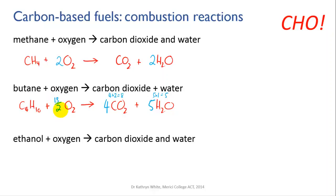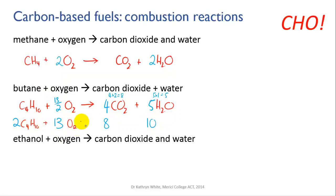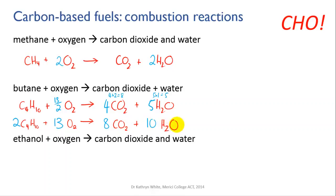We're not really allowed to have fractional numbers of molecules, so how do we turn this into a whole number? The easiest thing is to multiply through the entire equation by two. If you double everything, the oxygen will become a whole number. So: double the butane, double the oxygen gives us 13, double the carbon dioxide gives us 8, and double the water gives us 10. Double-checking: two times four on the left is eight carbons, and eight carbons on the right. Two times ten is twenty hydrogens on the left, and ten times two is twenty on the right. Oxygens: thirteen times two is twenty-six on the left.